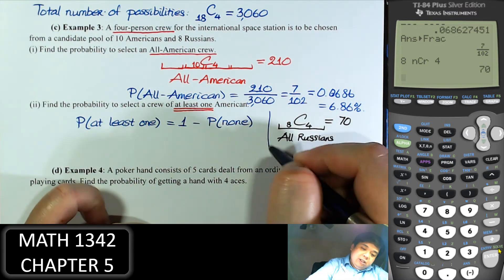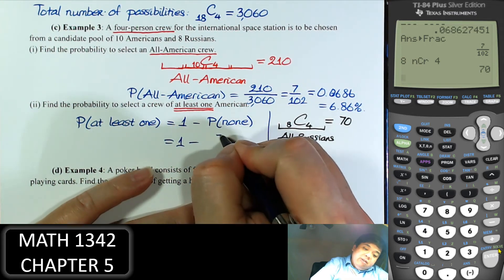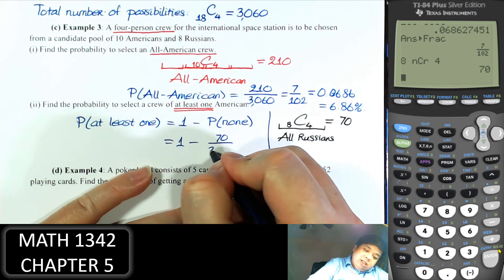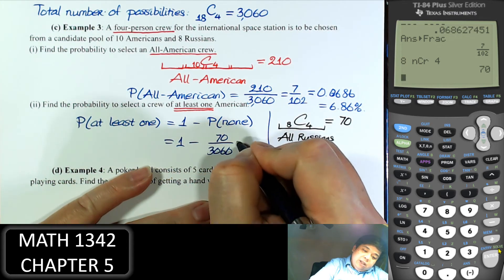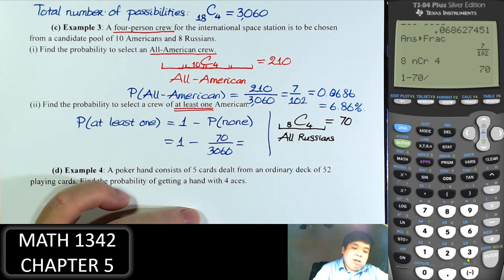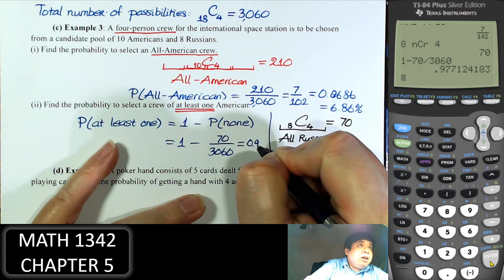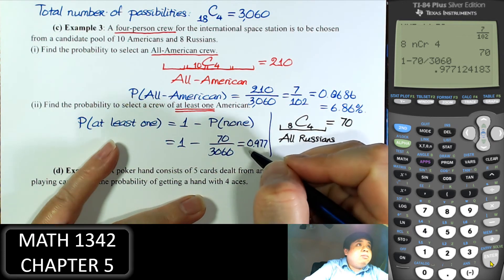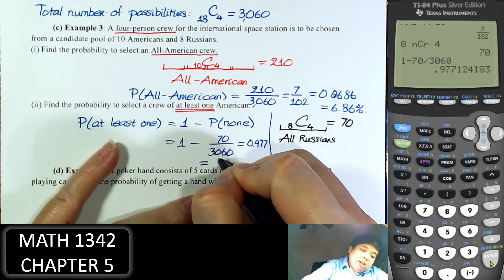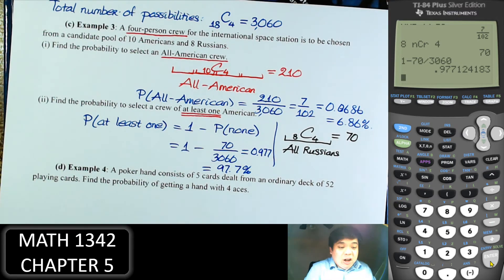Put the math together: the probability of no Americans is 70 out of 3060. So the probability of at least one American is 1 minus (70 divided by 3060), which gives approximately 0.977 — about 97.7% of the time the crew will have at least one American.